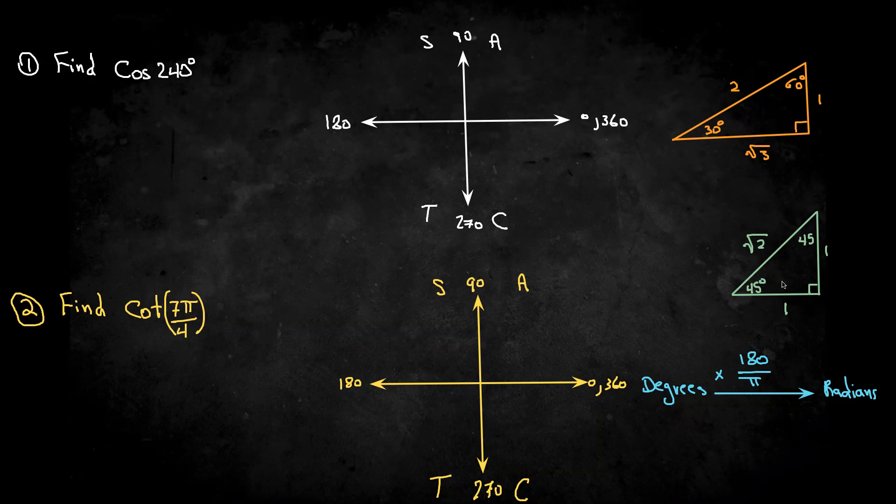Now, I drew the special angle triangles for you. Also, I show you how to move from degree to radians or change from degree to radians by multiplying by 180 over pi because a lot of students don't like working with radians.